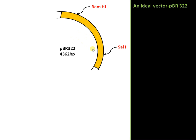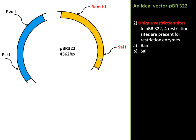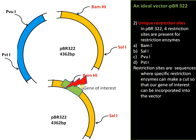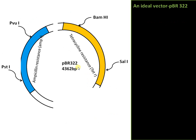There are at least 12 unique restriction sites in pBR322 — BamHI, SalI, PstI, PvuI — and all are located within the selectable marker regions. In order to integrate our desired gene into the vector, we use these restriction sites. We make a cut at the BamHI site or any restriction site and introduce our gene of interest at that location.